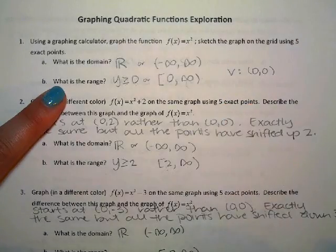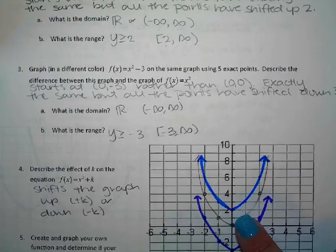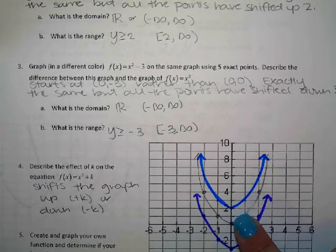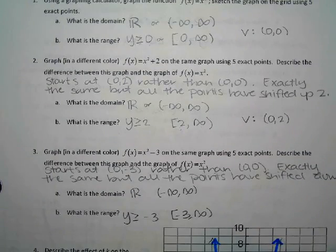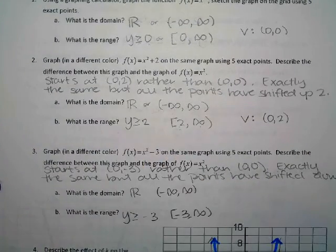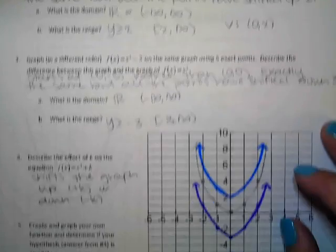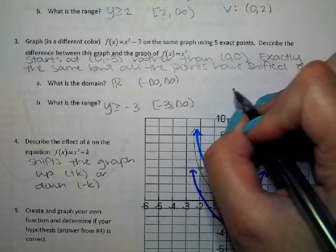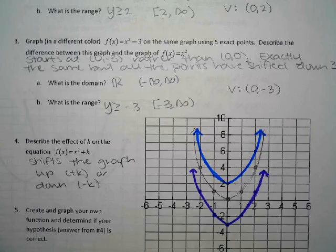When we shifted the graph up to two, the vertex is (0, 2) — Peter described it as starting at (0, 2) instead of (0, 0). For number three, we took a K value of negative three, which meant it shifted down three. What's the vertex for number three? You have to write (0, -3). Writing just negative three is misleading because you don't know if it went left or down. You need to write two points — one for the X coordinate, one for the Y coordinate.